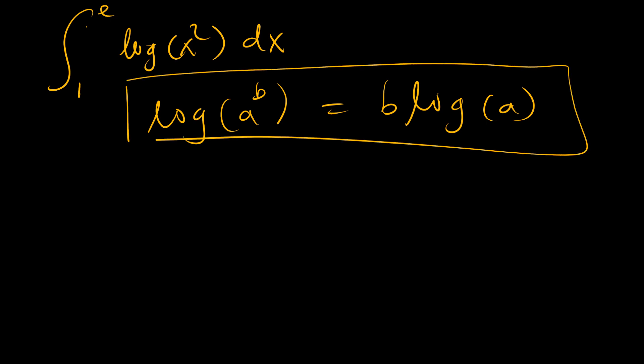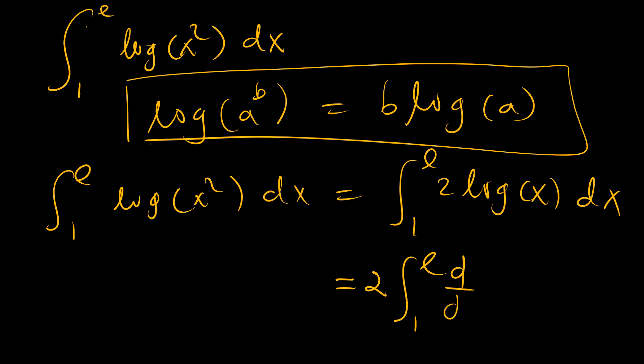So using this, our integral is the same as the integral from x equals 1 to x equals e of 2 natural logarithm of x, right? And one thing we can now do is pull the 2 out. So there's a hidden 1 here, which is the derivative of x.